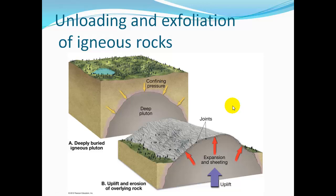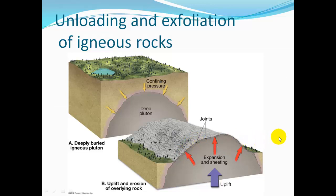Unloading and exfoliation. As we see with a deep igneous rock, a deep pluton underground, there's confining pressure. When the rock and soil above it gets eroded away, there's less pressure, so it's going to start wanting to expand. As it expands, it's going to start cracking, making joints. That causes exfoliation, where granite that's weathered will start peeling apart almost like an onion.